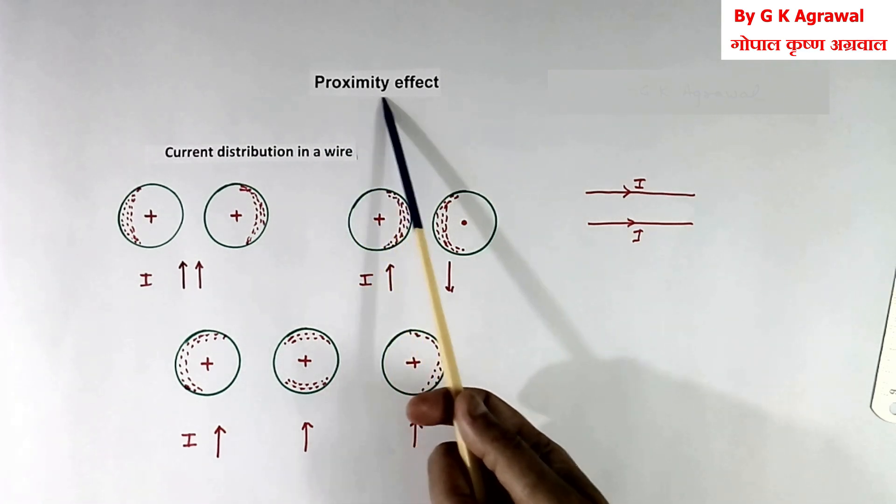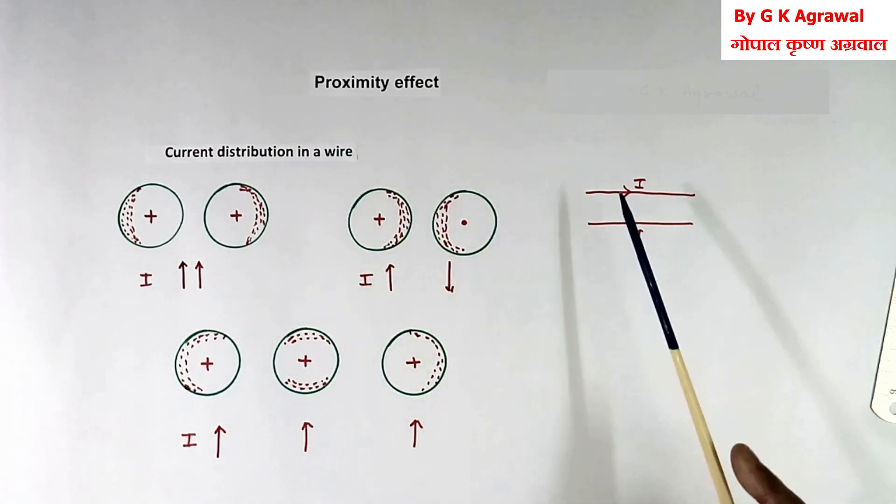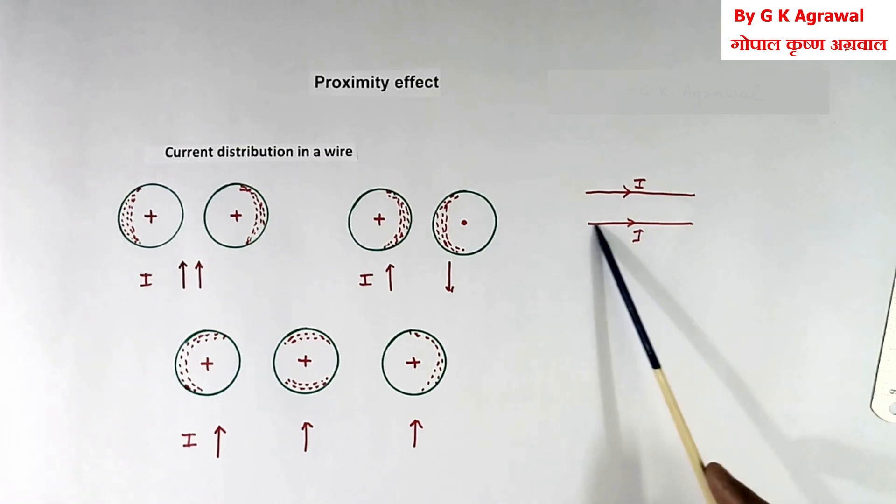Now we will learn what is proximity effect. Suppose there are two wires, and AC current is flowing in both the wires.